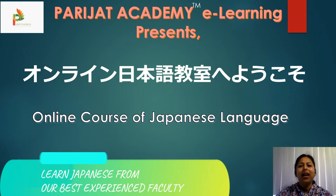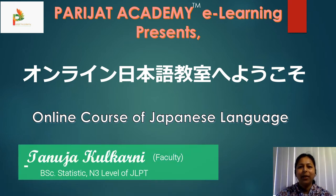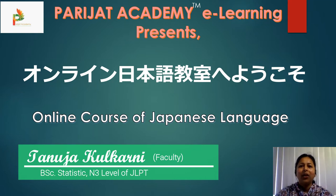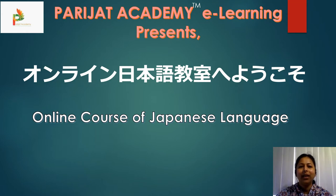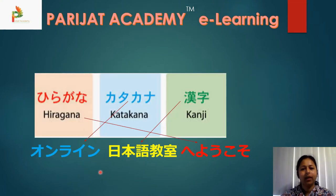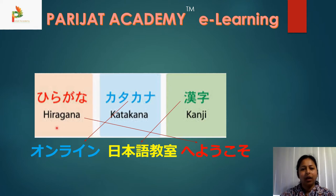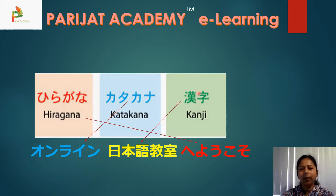Hello everyone and welcome to online Japanese class. Today we are going to talk about some fundamental knowledge of Japanese characters. Japanese language consists of three scripts: hiragana, katakana, and kanji. Hiragana is used for Japanese words, katakana is used for foreign words, and kanjis are pictorial representations.